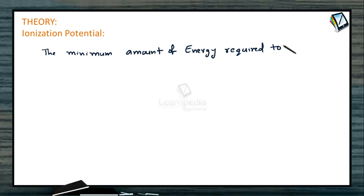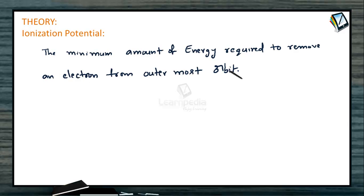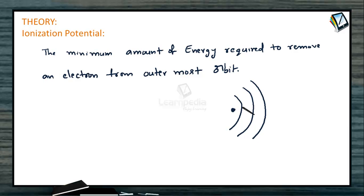The minimum amount of energy required to remove an electron from the outermost orbit. In atoms, electrons are arranged in orbits. If you give energy to the element, the electrons present in the outermost shell are removed. Take a simple example: an element has electrons in its orbits. In the first orbit there are two electrons, and in the next orbit there are eight electrons, because the second shell can occupy a maximum of eight electrons.